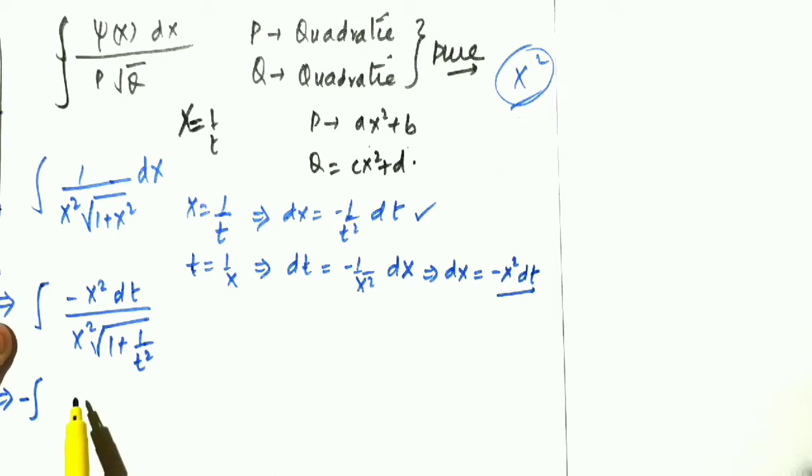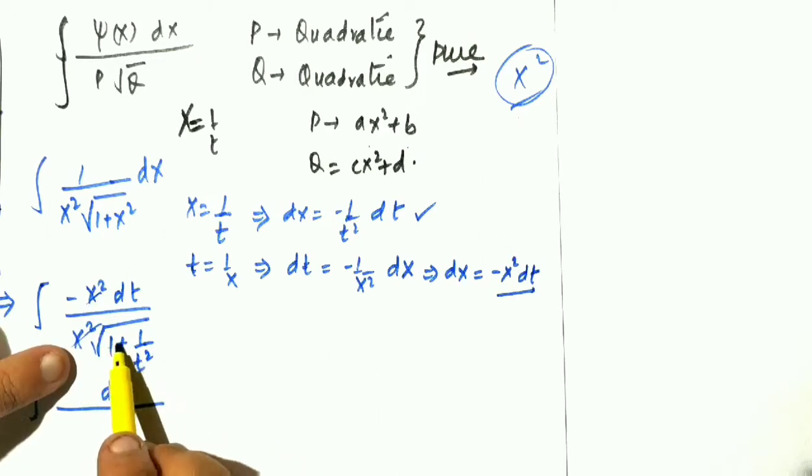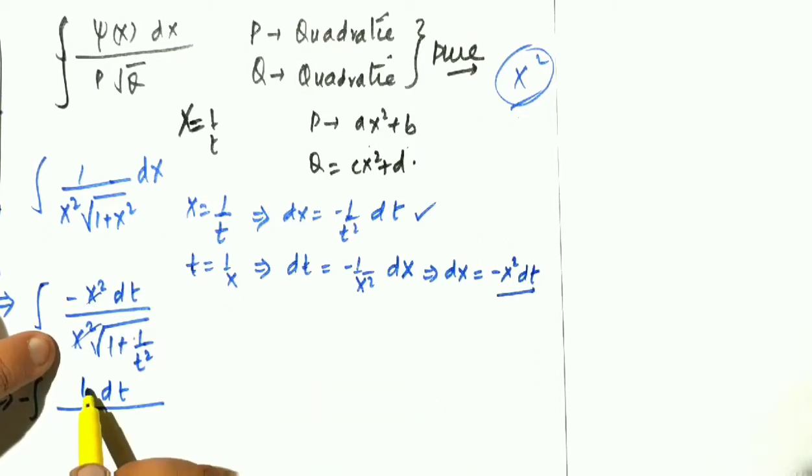So what expression will be left? That negative of this is dt divided by, this will cancel, so t square plus 1. And on top t will go. Therefore t divided by 1 plus t square.